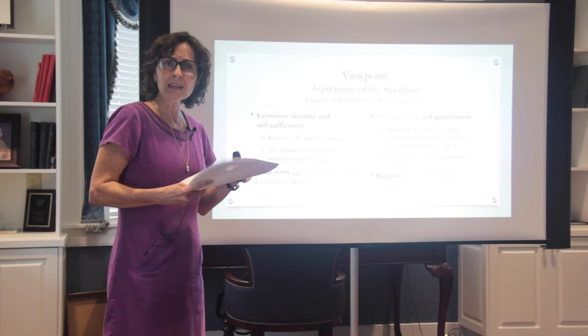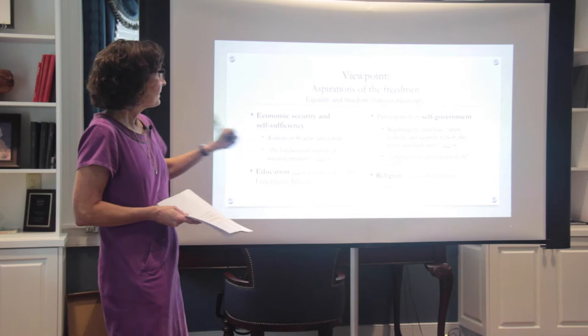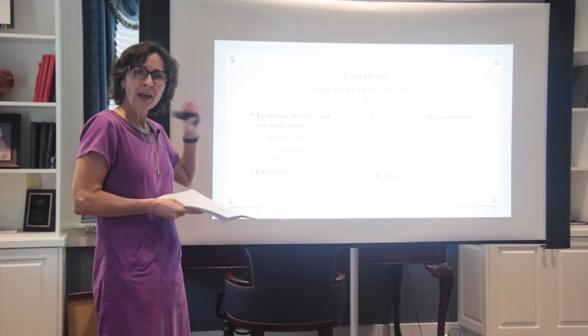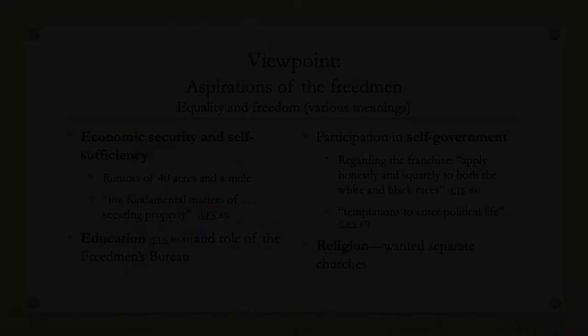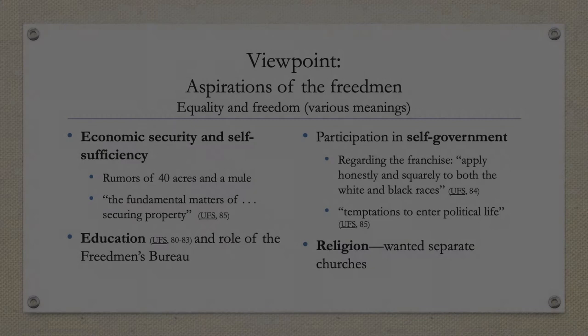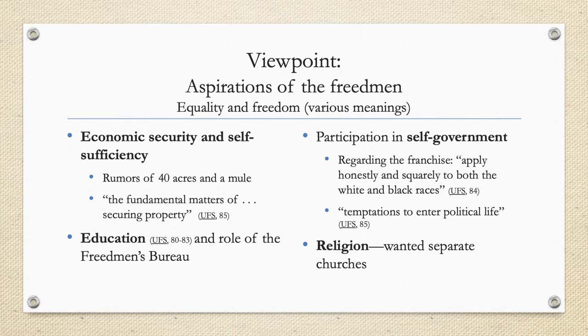Economic security and self-sufficiency — 40 acres and a mule, that was the rumor that got started. This is just one of the sources the David Matthew Center will have in that guide — abbreviated from Booker T. Washington's book, Up from Slavery. I've chosen that one to pull a few examples of quotes that maybe you can use. Obviously we're interested in economic security and education.